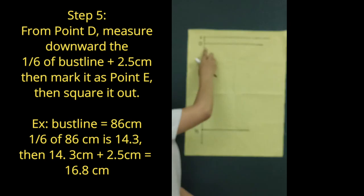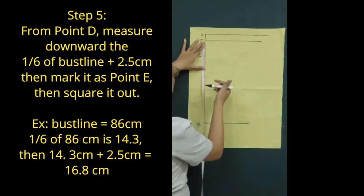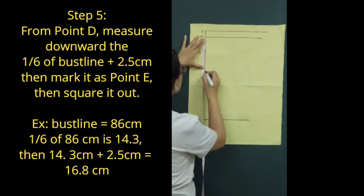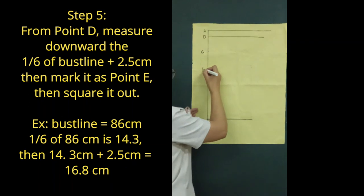Step 5: From point D, measure downward the 1/6th of bust line plus 2.5 cm. Then mark it as point E. Then square it out.